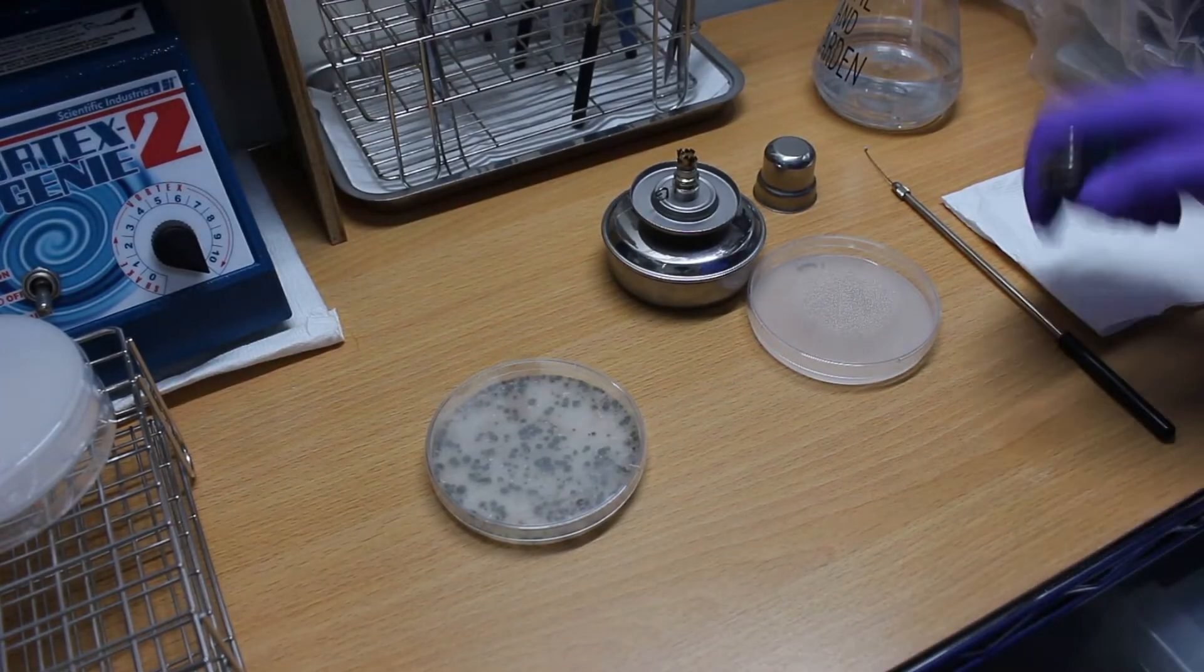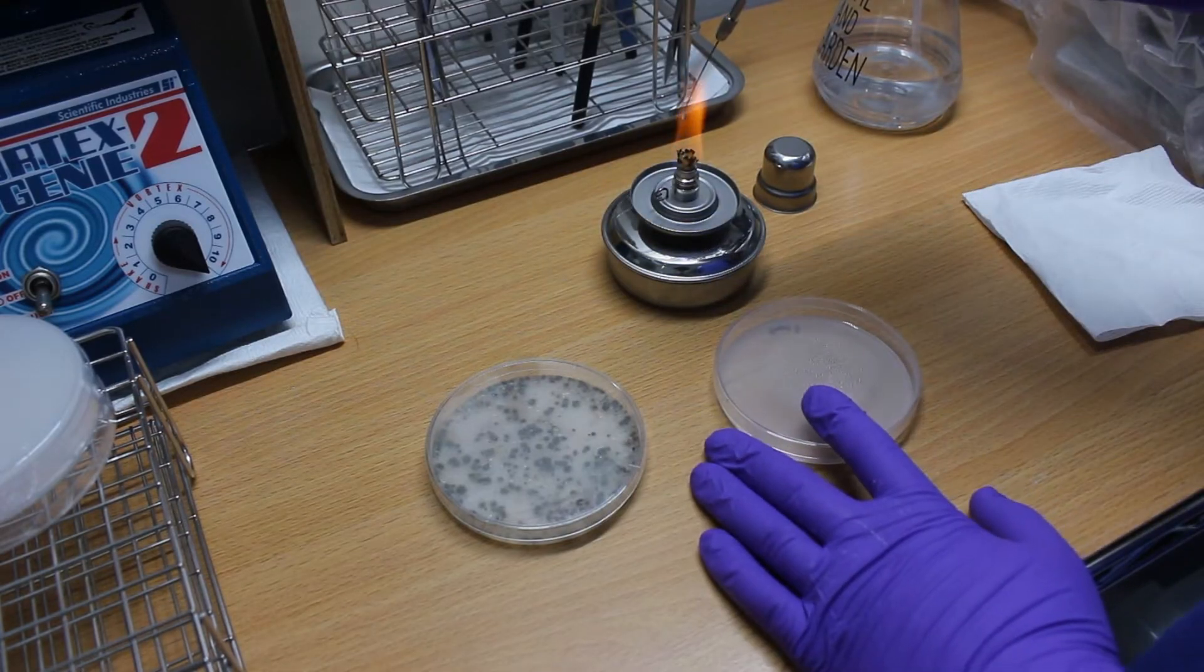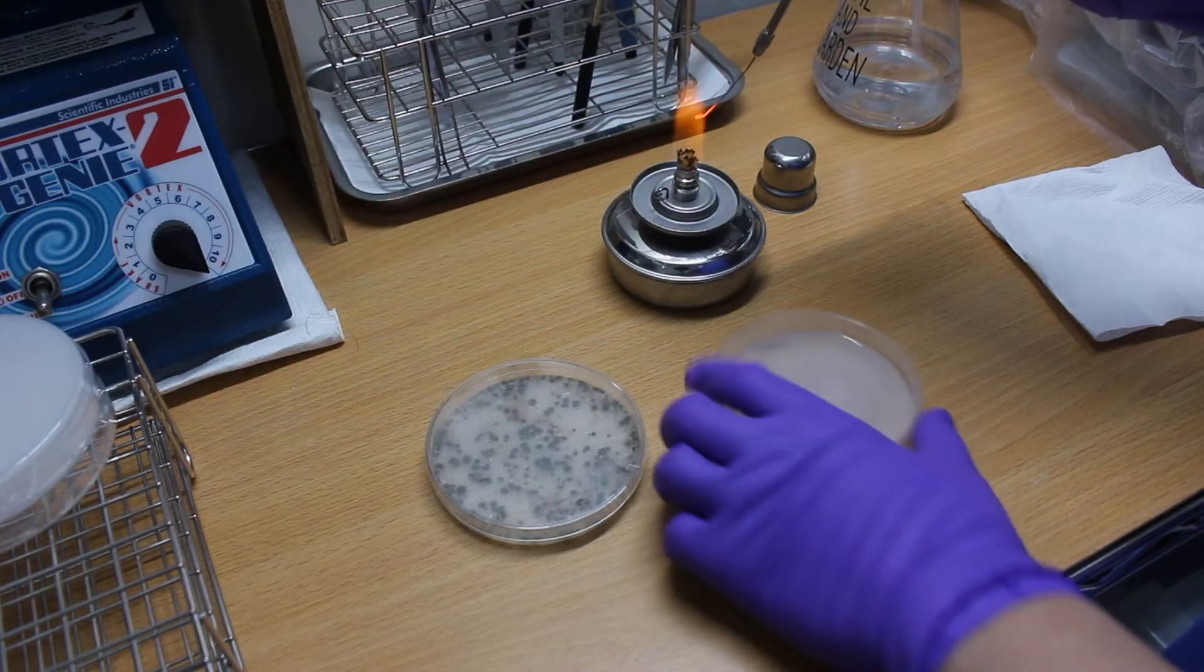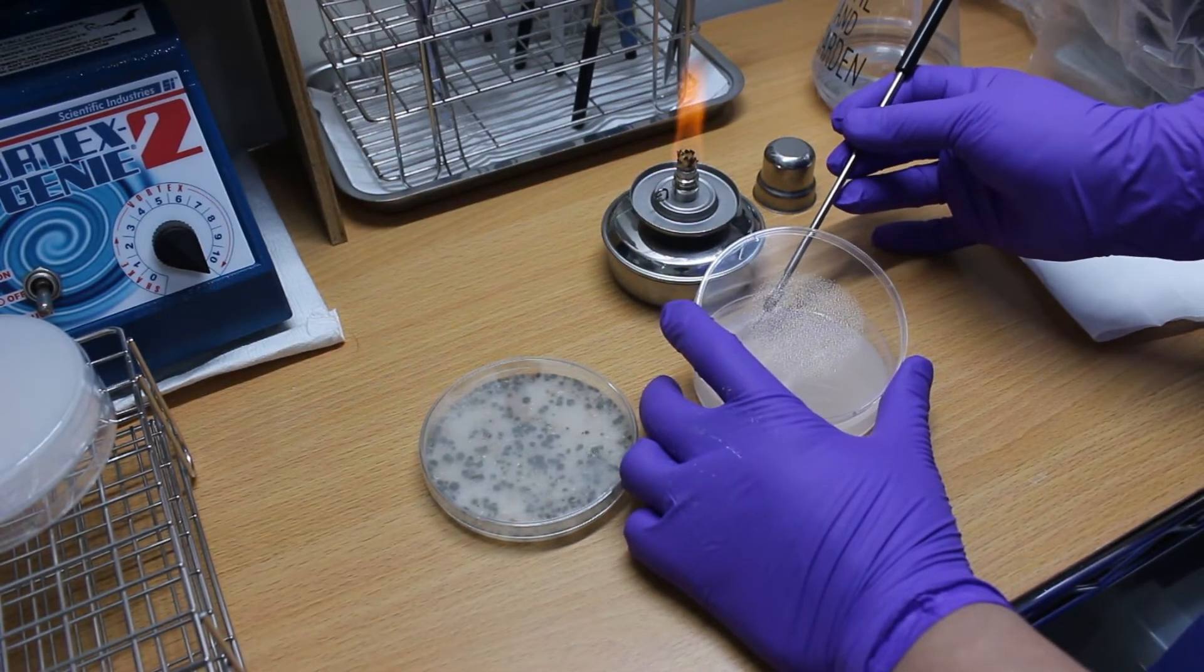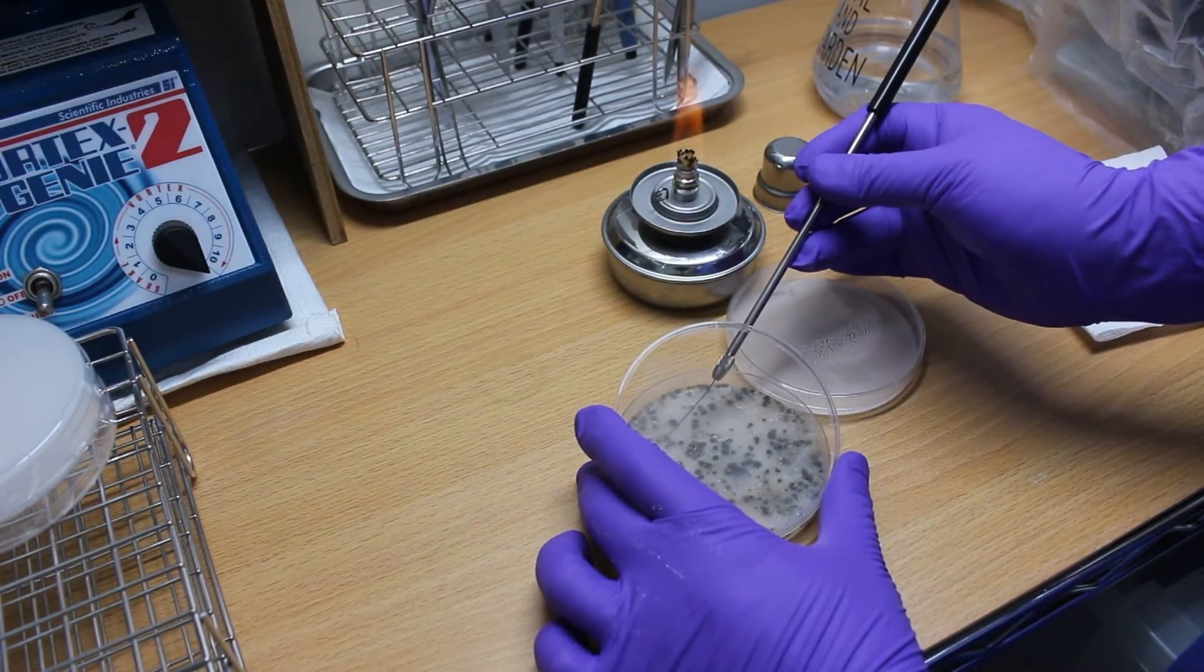Next, use the inoculation loop to transfer the bacteria colony to a new agar plate to isolate and purify it using the streaking plate method. I have a video you can watch about this method if you are not familiar with it.